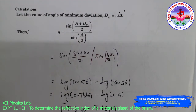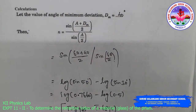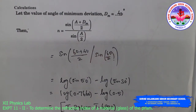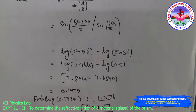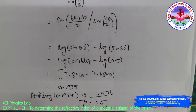Calculations. From the graph, dm = 40° and angle of prism A = 60°. Using n = sin((A + dm)/2) / sin(A/2) = sin(50°) / sin(30°). Taking logarithms: log sin 50° = 1̄.8965, log sin 30° = 1̄.6890. Subtracting: 0.1975. Taking antilog gives refractive index n = 1.5.